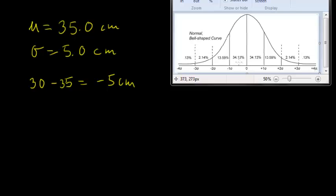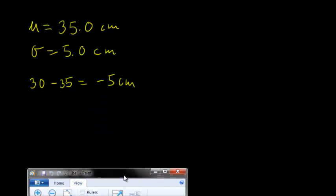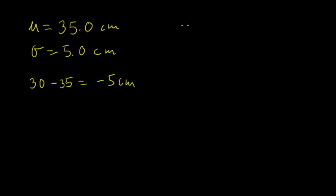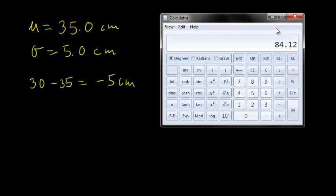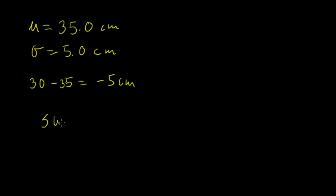We add up 34.13 for this bin, plus 34.13 for this bin, plus 13.59, plus 2.14, plus 0.13. Bringing in the calculator and adding those values together, we find that this sum is 84.12%.